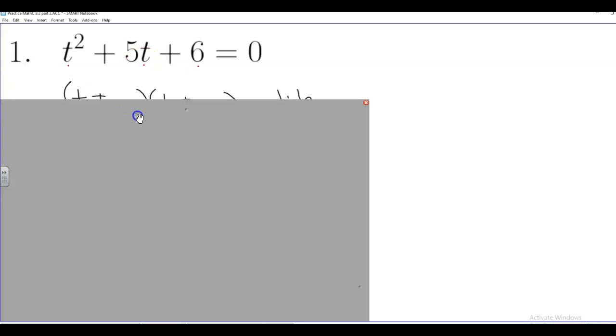And I look at this and think, my first bet I think I'm going to factor. So t squared comes from t times t. Positive on the 6 says both sides down here are the same. Positive on the 5 in the middle says they're both positive symbols.